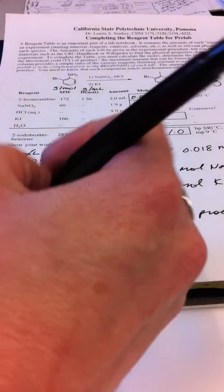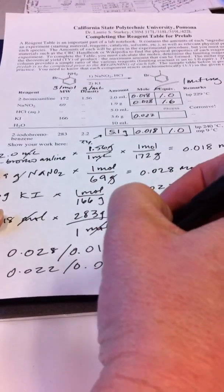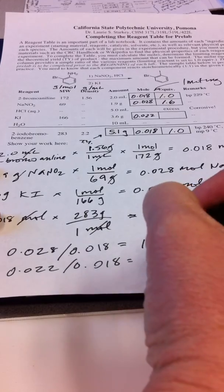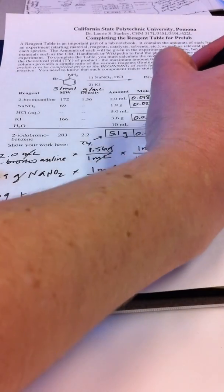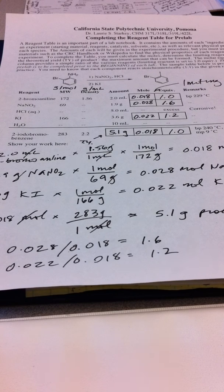And our last one, 0.022 divided by 0.018 and what we get is 1.2 equivalents. So again, I'm using just a very slight excess of this reagent, of the potassium iodide, just 20% excess.